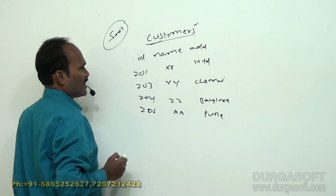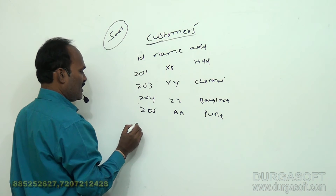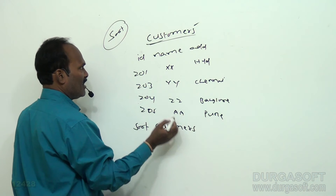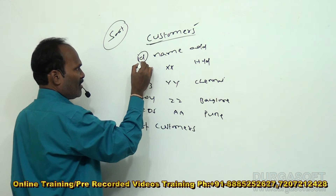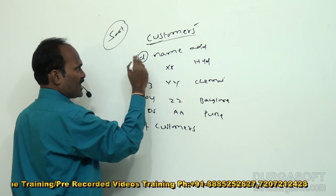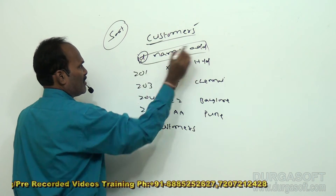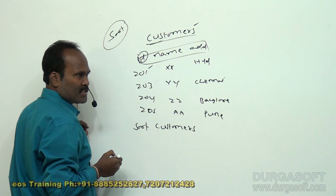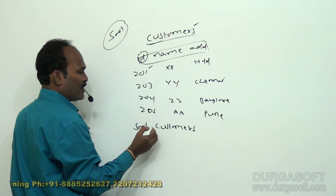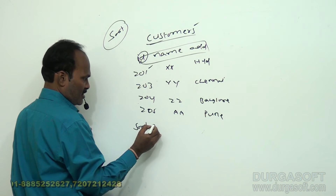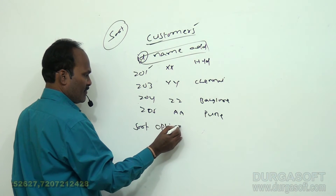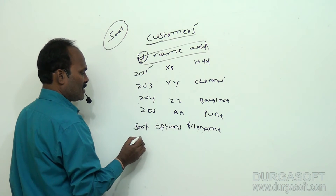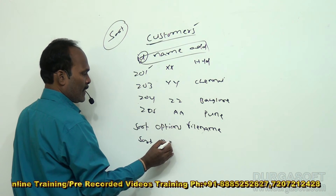I have one file called customers. After creation of the customers file, you can type sort customers. The sorting is done according to the first field — the ID column. Since the first column is in numeric format, if you want to sort as per numeric format, you need to use the option minus n. The syntax of the sort command is: sort [options] filename — for example, sort minus n customers.